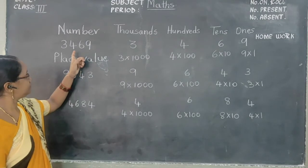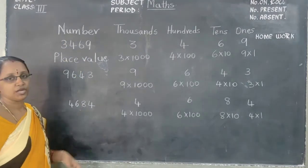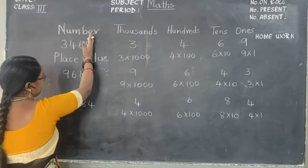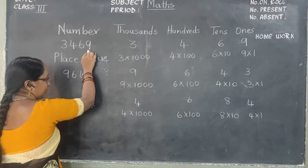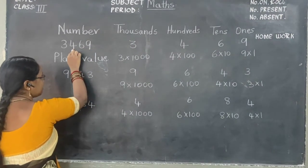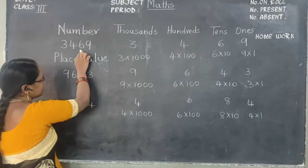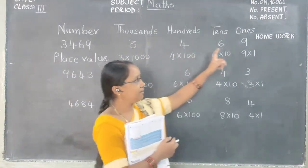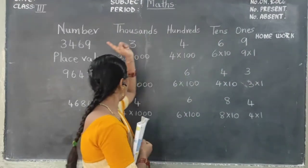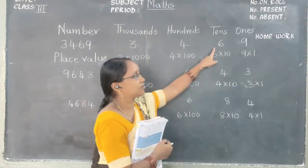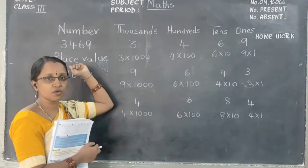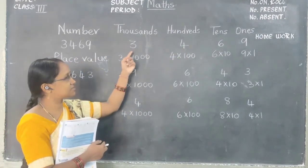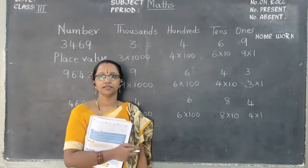So once again, see children. They have given us some digits and we have to count how we are going to find the place values — from right hand to left hand. We say ones, tens, hundreds, thousands. In the ones place: 9. In the tens place: 6. In the hundreds place: 4. In the thousands place: 3. Like this you write the digits in their correct places.